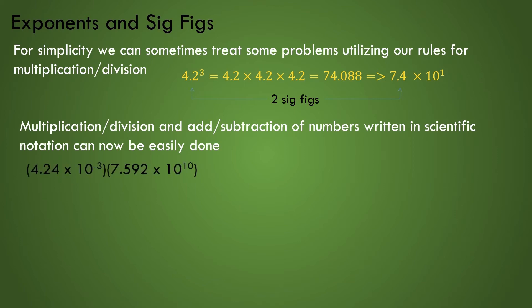First, let's do the easier multiplication and division example. When we compute 4.24 times 10 to the power of minus 3 times 7.592 times 10 to the power of 10, we first gather the numbers in front of each scientific notation value together, the 4.24 and 7.592 values, and multiply them together. We then gather the base 10 exponentials together, 10 to the power of minus 3 and 10 to the power of 10, and then compute by adding the exponents, 10 to the power of minus 3 plus 10.